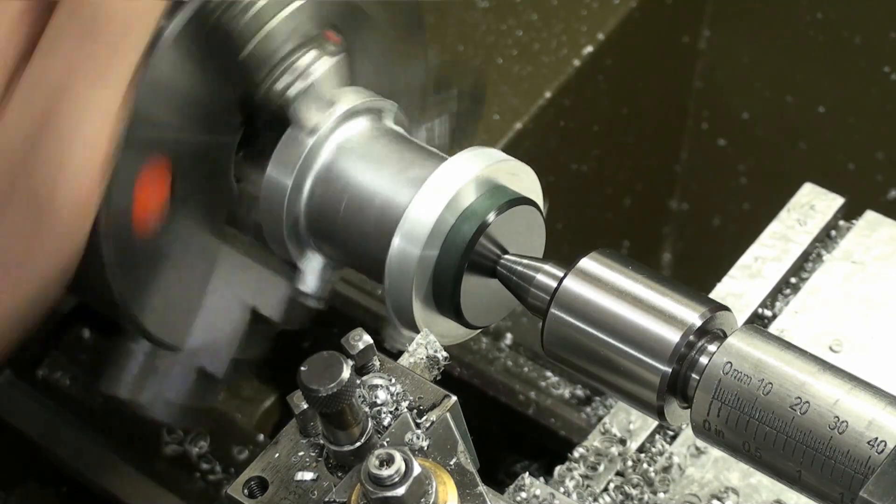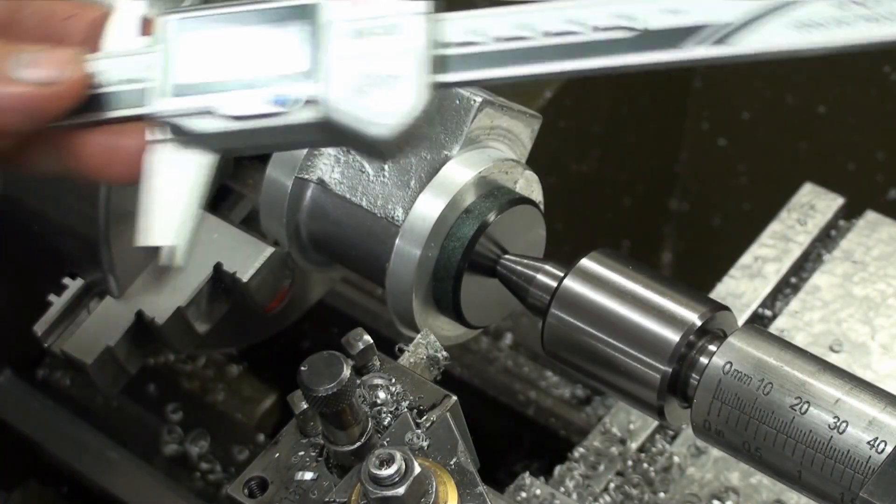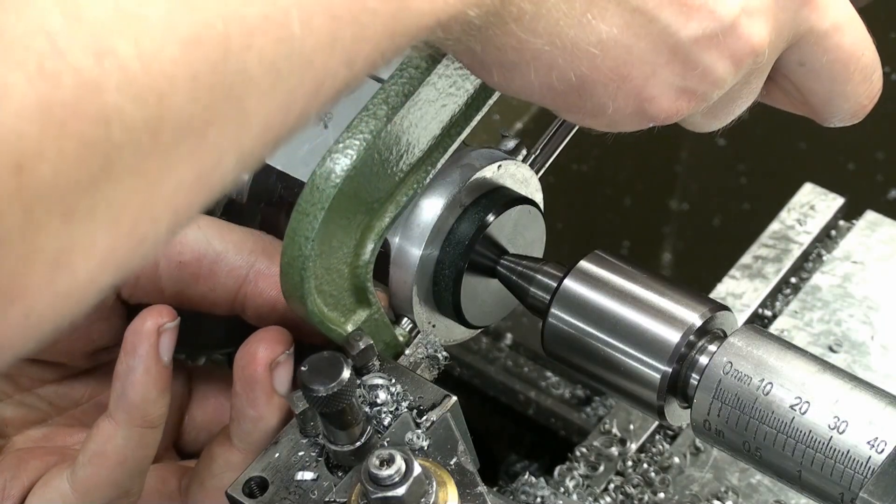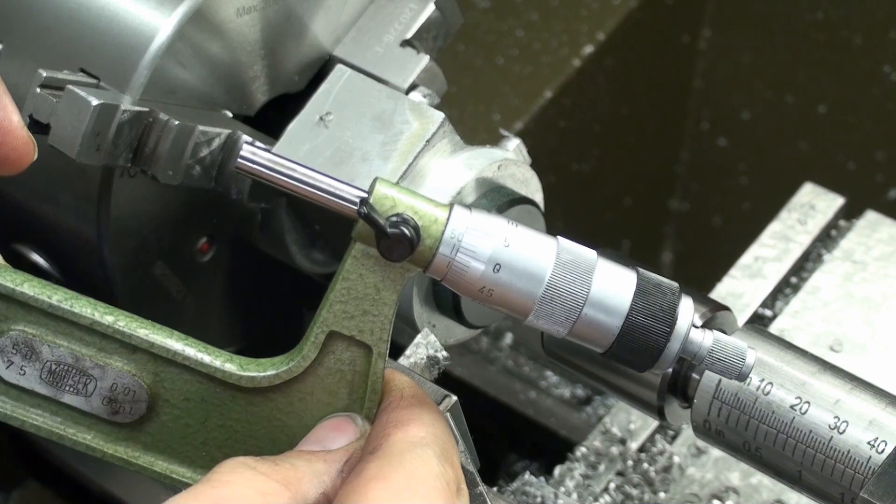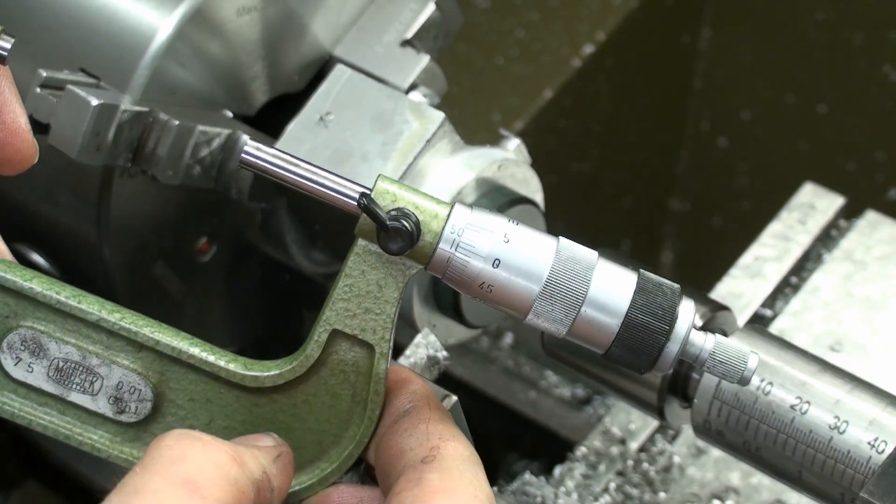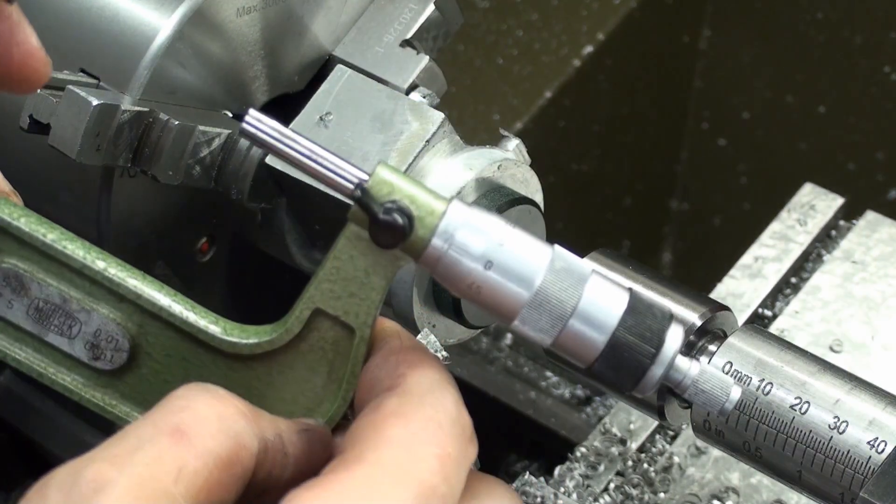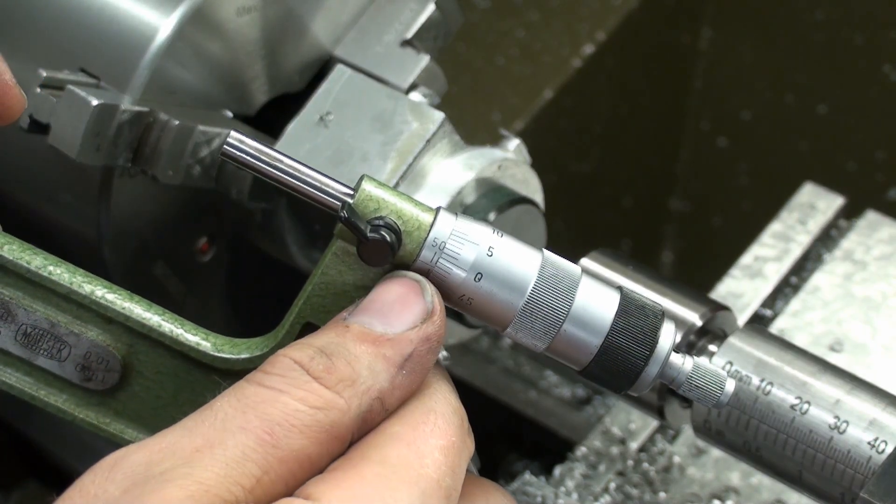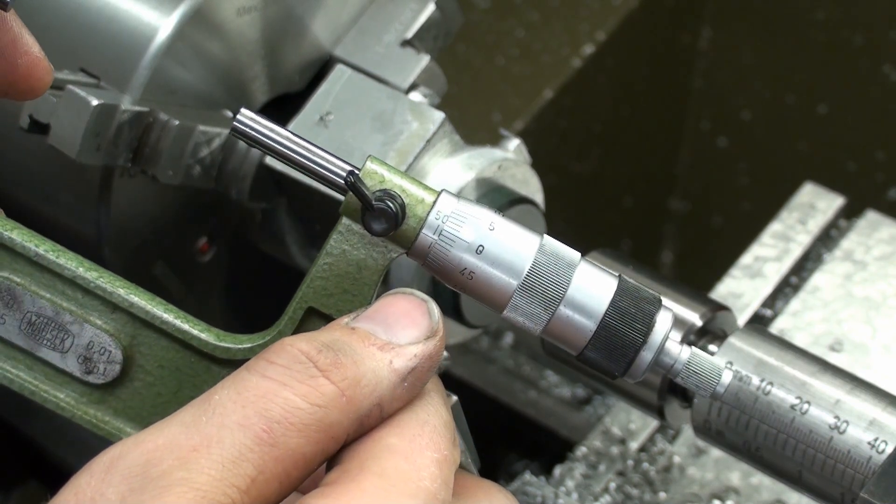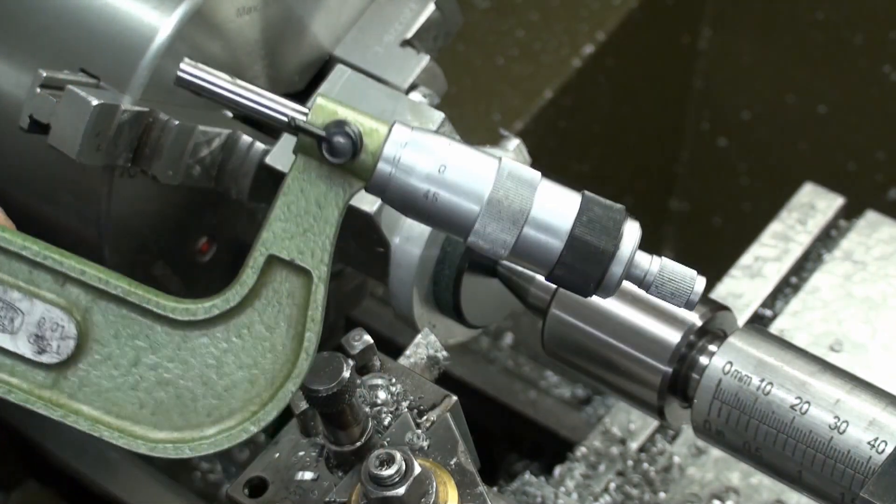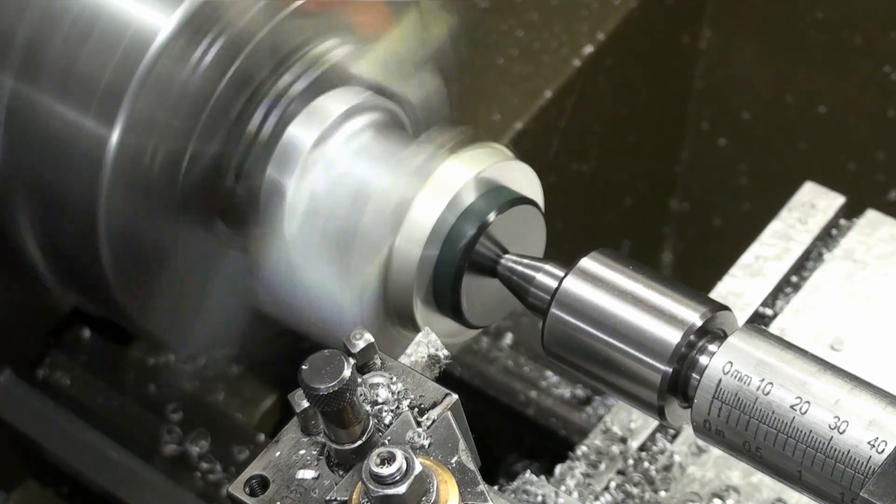Now we have a full diameter all around. 50.98. We will verify that with the mic. That's the 50, 50.5 and there is 51 minus two and a half hundredths of a millimeter. More speed.